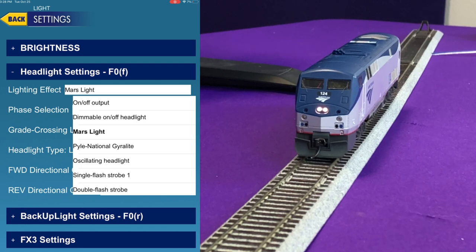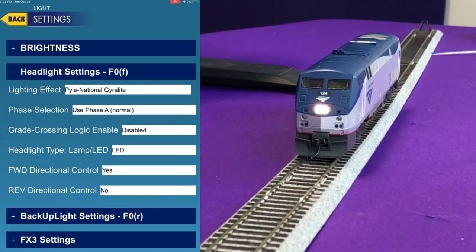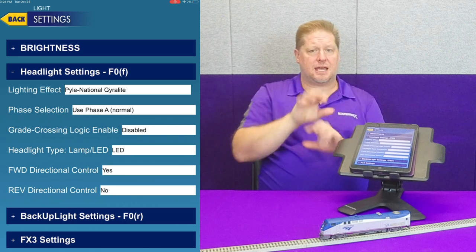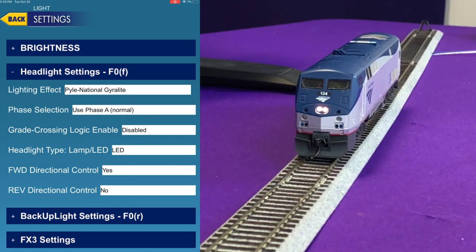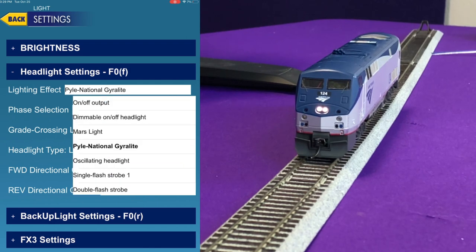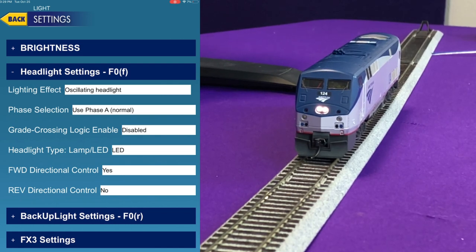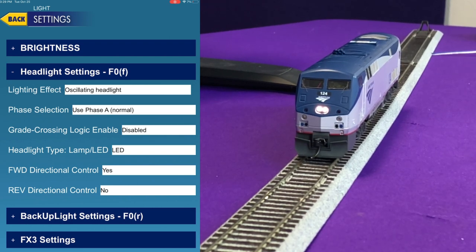Next we change to the Pyle National gyro light. You can see the gyro light pattern kick on — it's a little different because instead of a figure eight it does more of a circular pattern. After that is the oscillating headlight, where the bulbs themselves move in an oscillating pattern, giving a slightly different flash rate. All of these effects are designed to draw motorists' eyes to the flashing light so they don't get run over by the train.